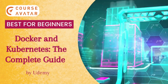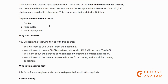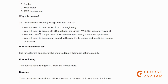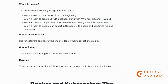Our first course is Docker and Kubernetes: A Complete Guide, available on Udemy. It's one of the best online courses for Docker. Here you will learn how to create, test, and launch Docker apps with Kubernetes. Topics covered include Docker, Kubernetes, AWS deployment, and you will learn how to use Docker from the beginning and create CI/CD pipelines along with AWS, GitHub, and CircleCI.